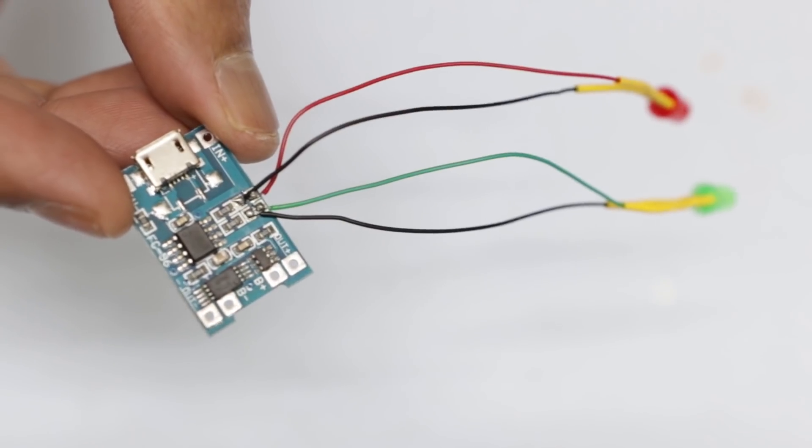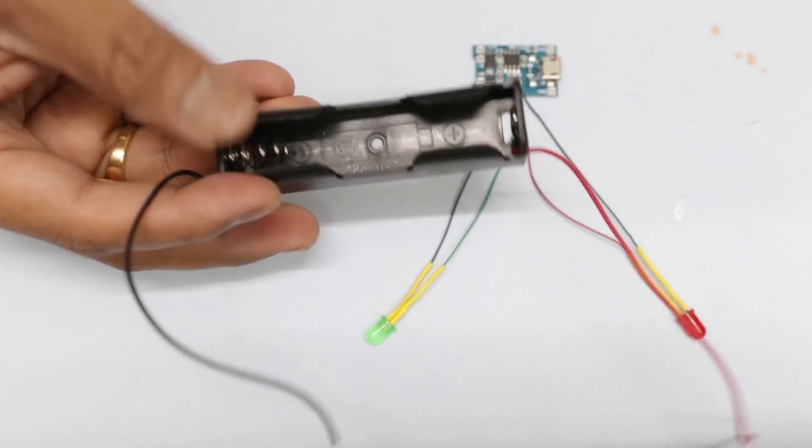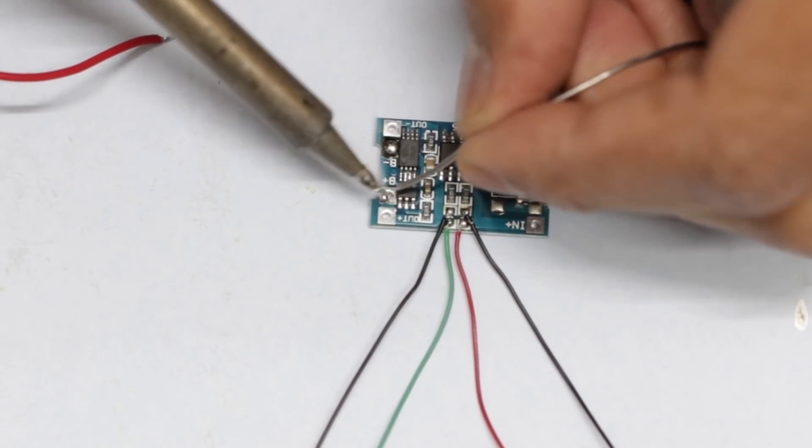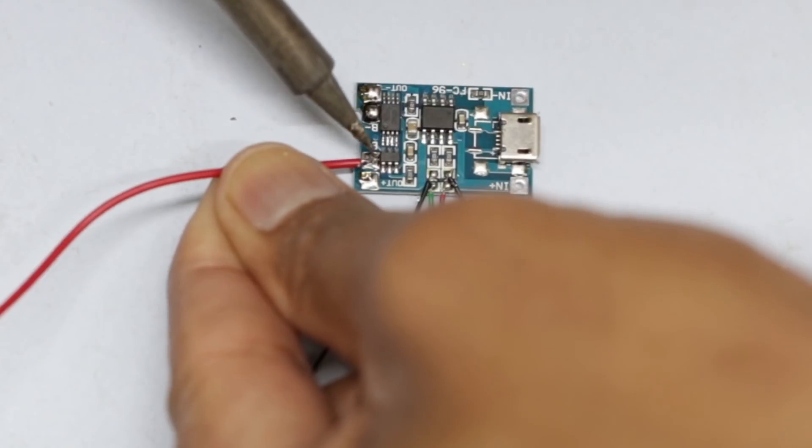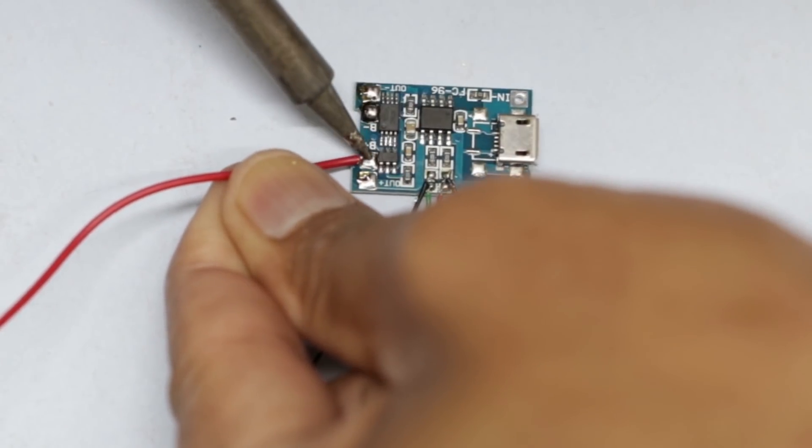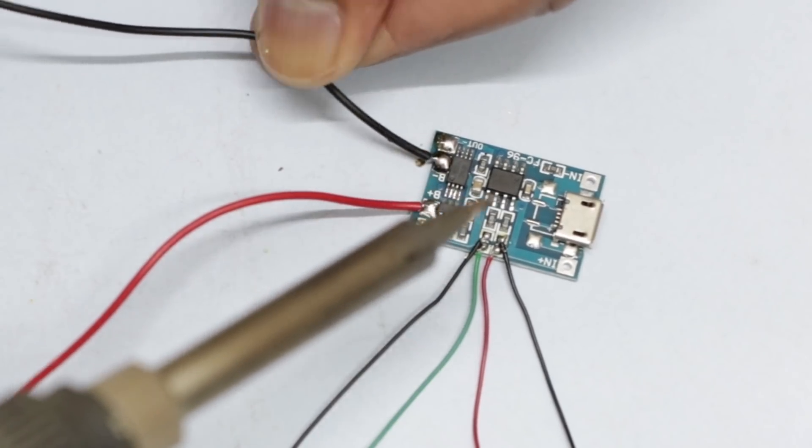After soldering the two LEDs, you have to connect the battery holder to the TP4056. The battery positive terminal is connected to B plus and negative terminal is connected to B minus.